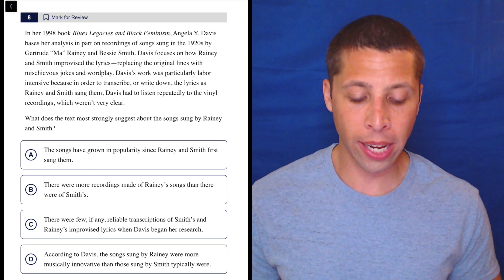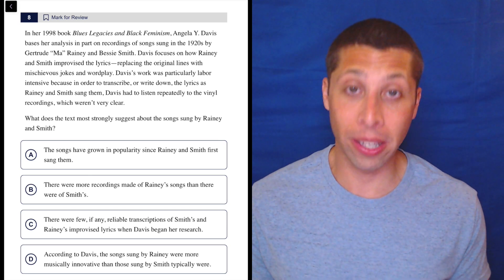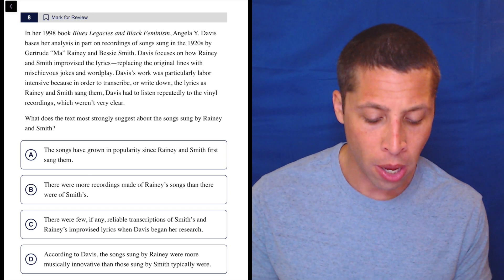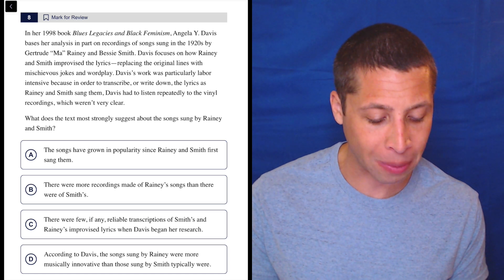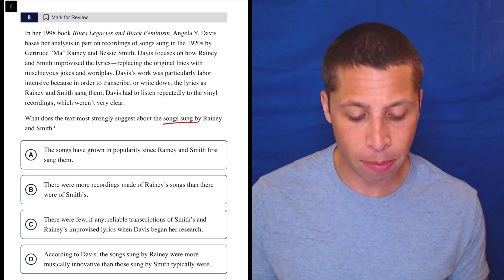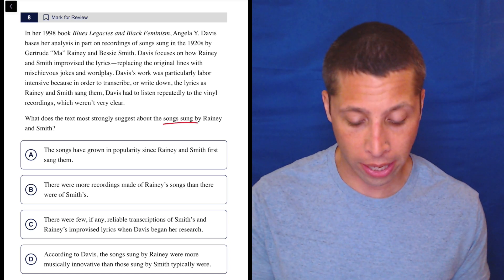Remember to read the question beforehand so that when you're reading a passage, you know exactly what you're supposed to be paying attention to. What does the text most strongly suggest about the songs sung by Rainey and Smith? So what about the songs? That's what I care about.